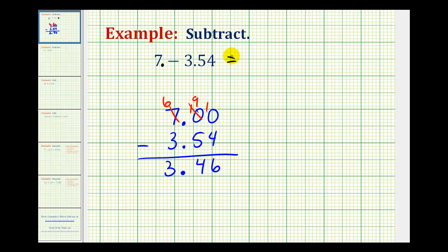So this difference is positive three point four six, or three and forty-six hundredths. Next we'll take a look at when we subtract our decimal that's larger than a whole number, and the result is negative.